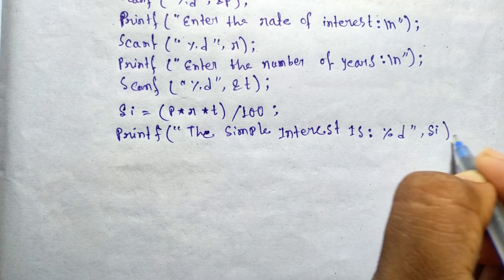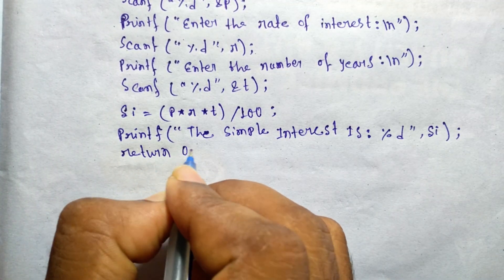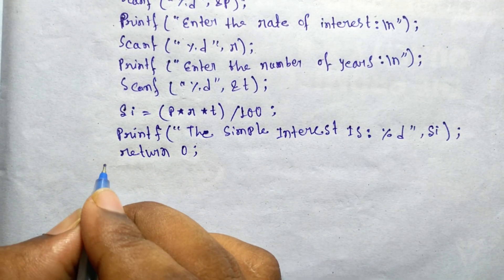The program calculates the simple interest and prints the result to the console. The program ends by returning zero, indicating successful execution.